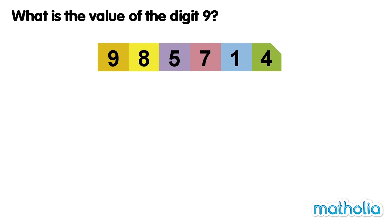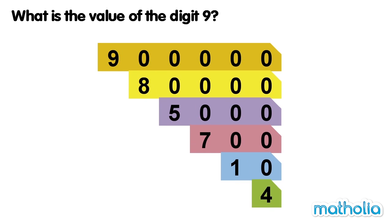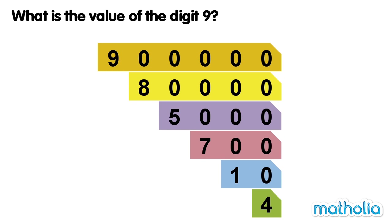What is the value of the digit 9? Place value cards have been used to make the number 985714. Let's find the value of the digit 9. Let's separate the number into its different place value cards. We can see that the digit 9 has a value of 900,000.